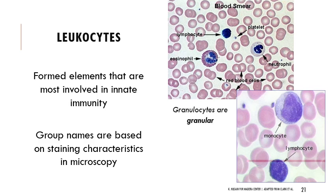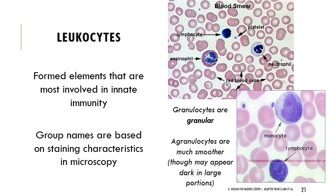Granulocytes are granular; agranulocytes are much smoother, but they can have dark portions. The lymphocyte can look very dark, so it's easy to confuse that darkness with something like the eosinophil, which has tons of granules and a lobed nucleus.